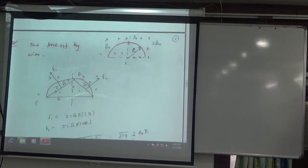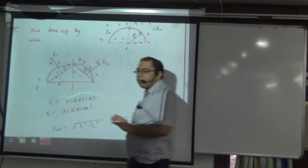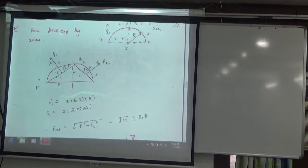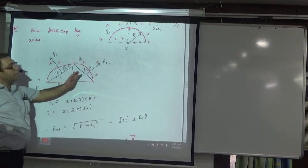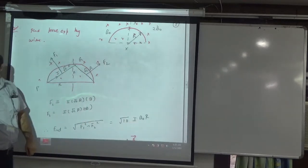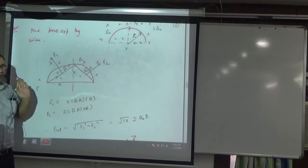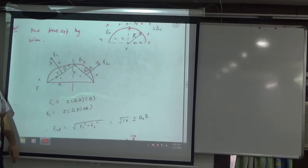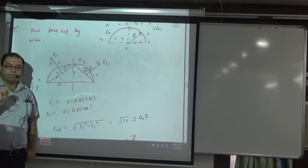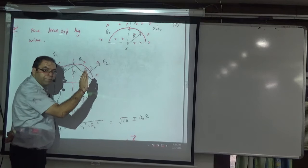Next question. A current carrying wire is in a magnetic field. In the middle region the magnetic field is B0, and on one side it is 2B0. So the field is non-uniform. We need the net force on the whole loop. If it were one uniform field, we would take a straight displacement of 2R. But here there are two different fields — B and 2B — acting on different wires.